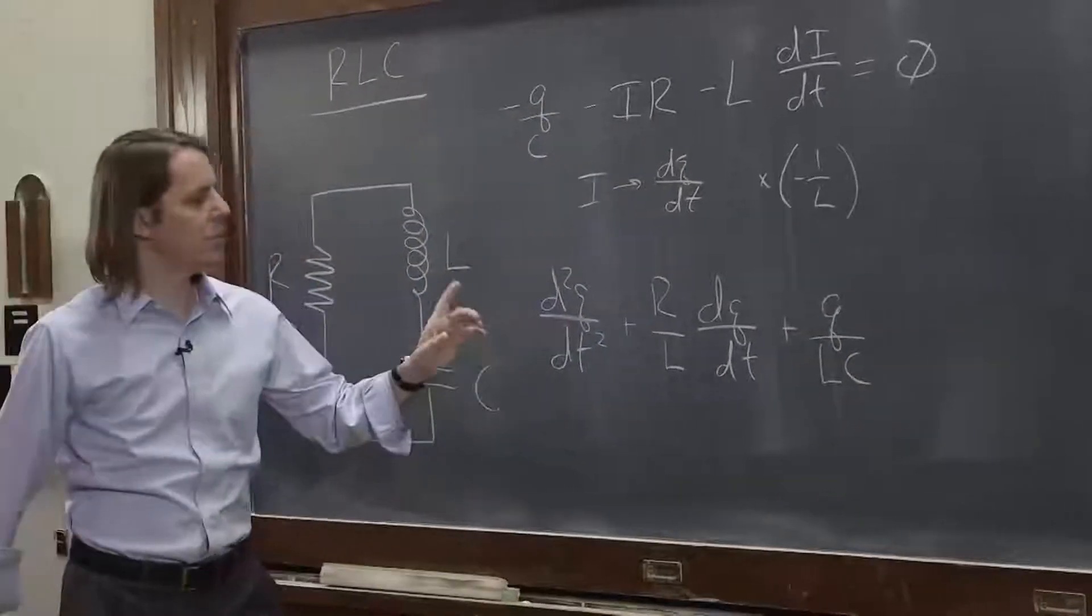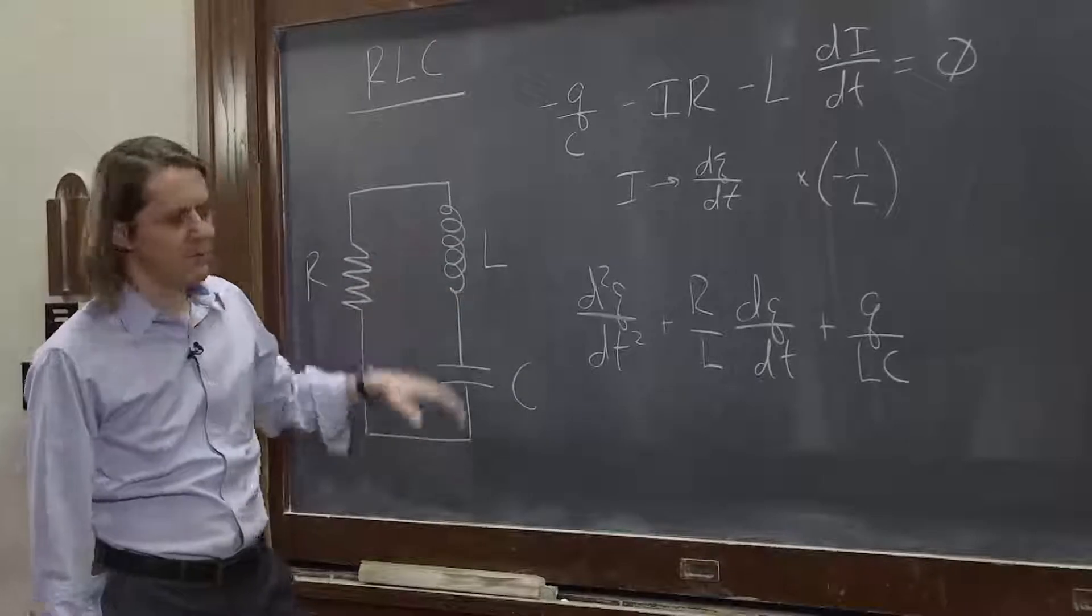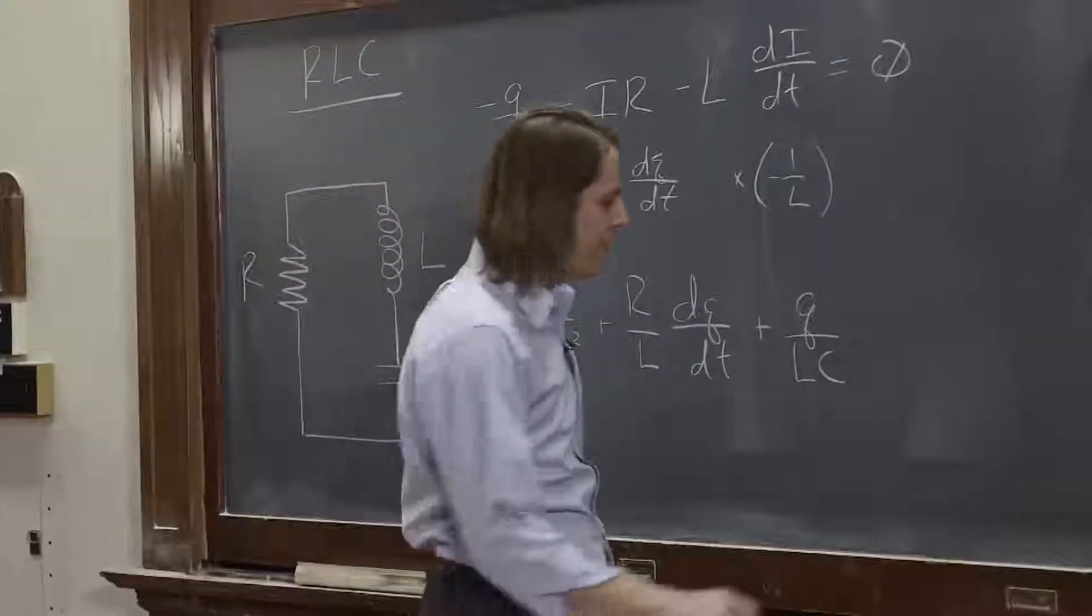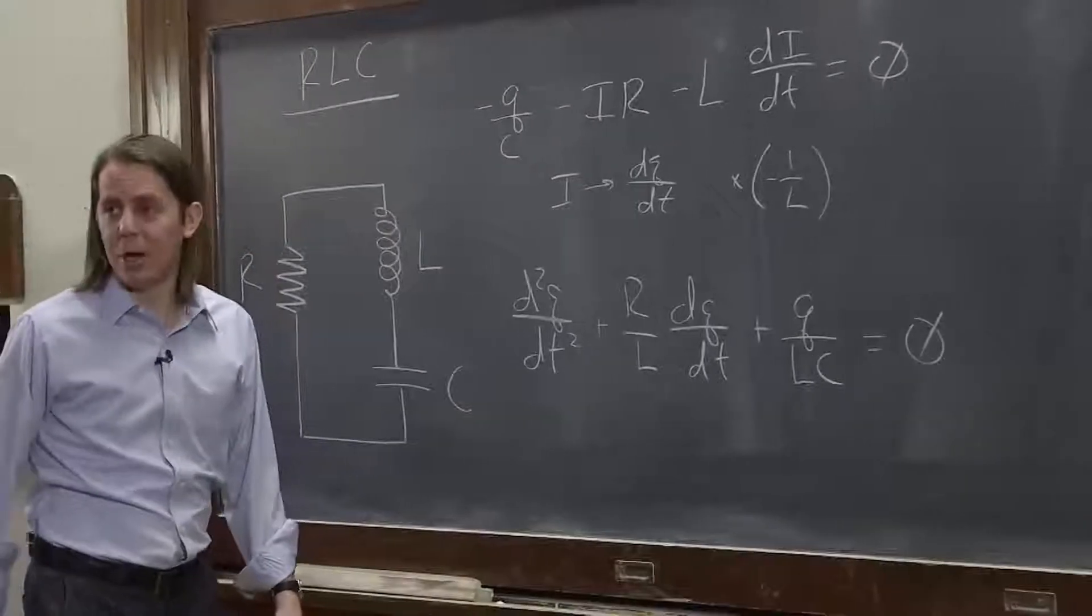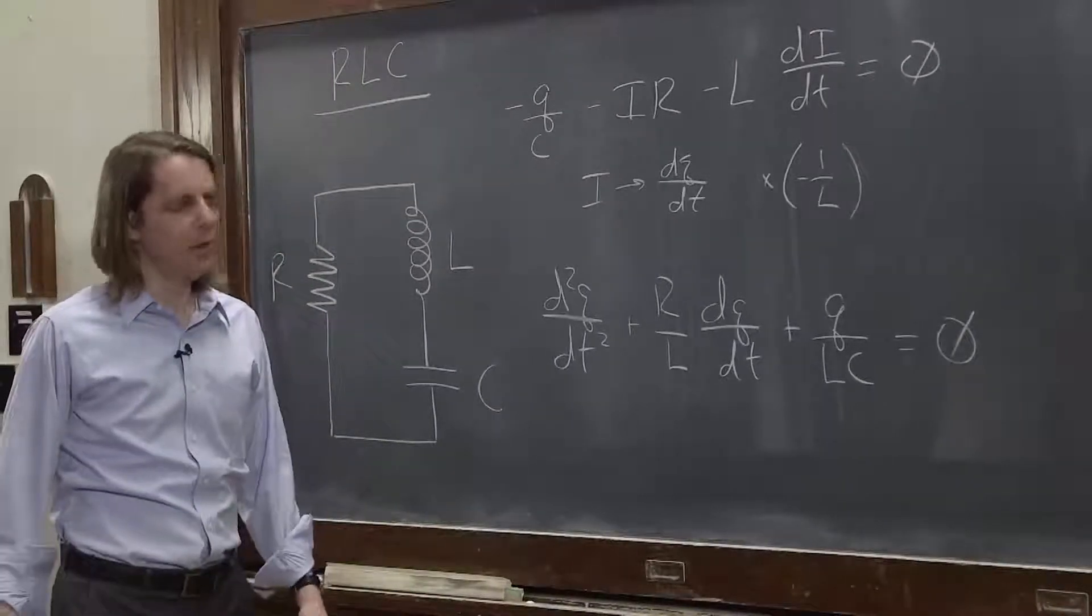Where in this case, remember, Q is a function of time. We're trying to figure out how does the charge behave in this circuit. And you multiply the right side by minus 1 over L and you get 0 on the right side as well.